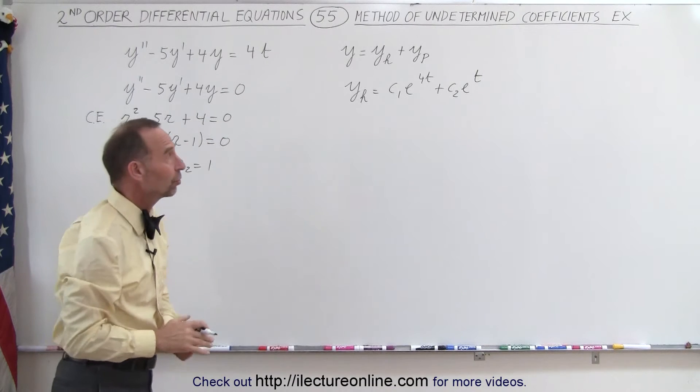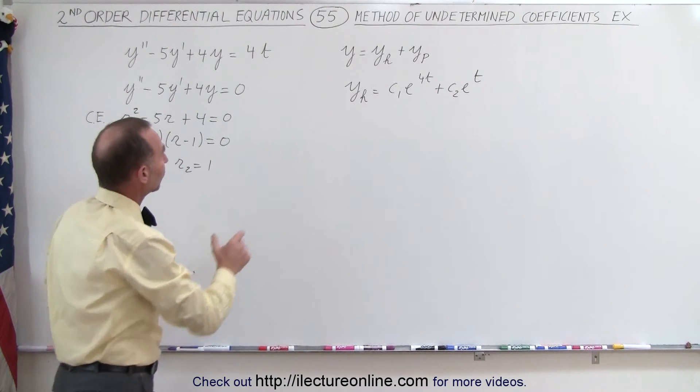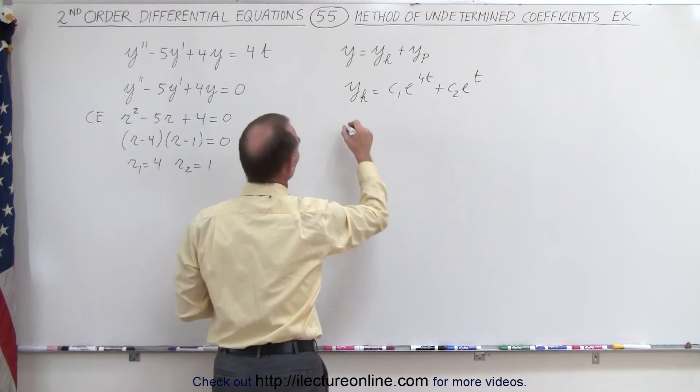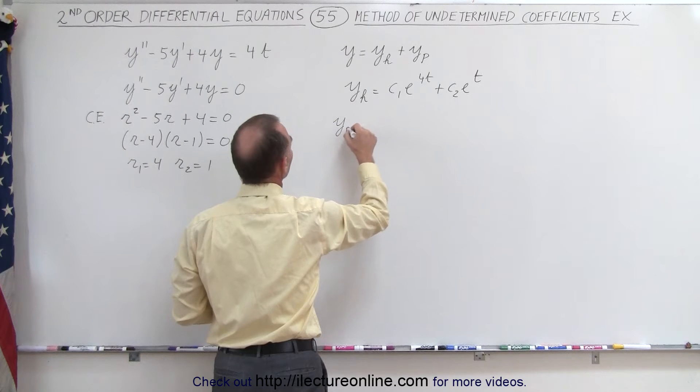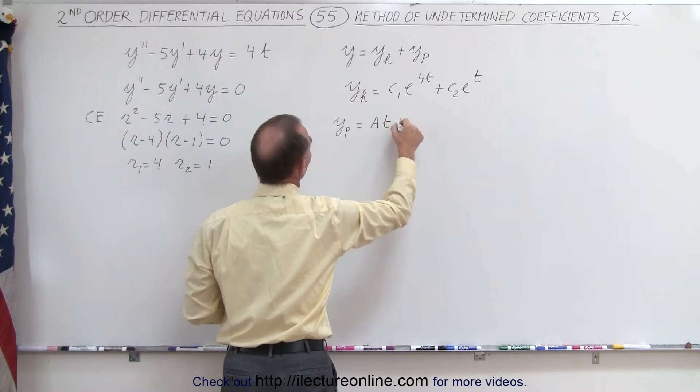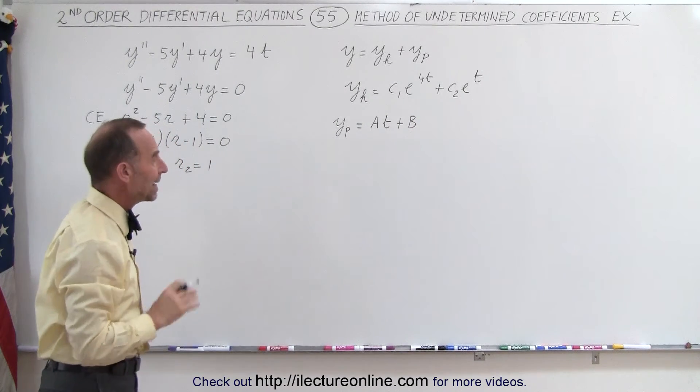Now that's the homogeneous part of the solution. Now to find the particular solution, we can guess that this is going to look something like a polynomial to the first power. So we're going to assume that y_p = At + B.